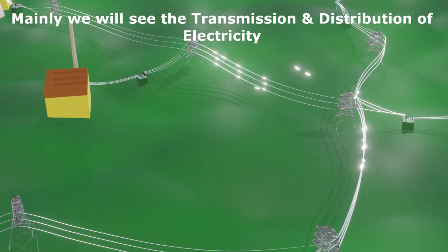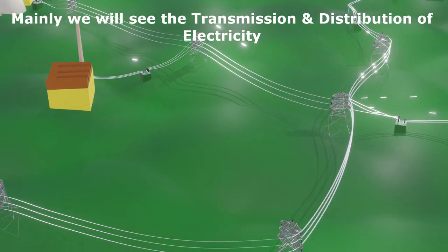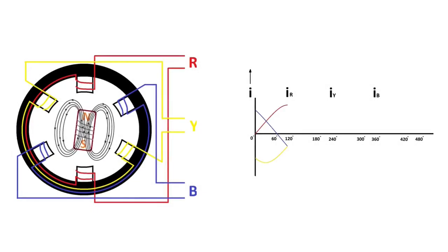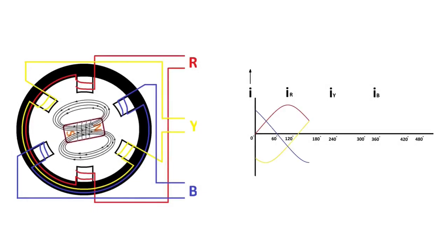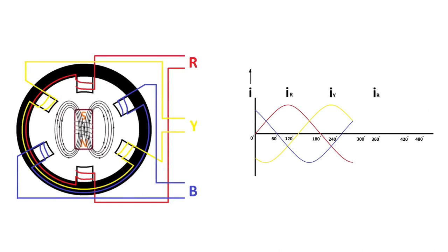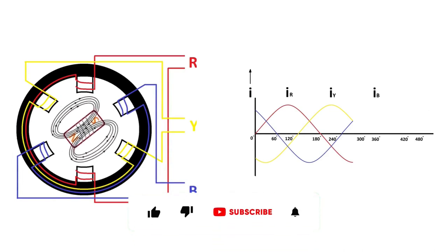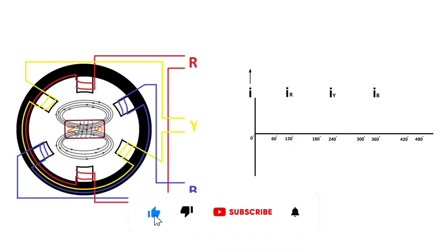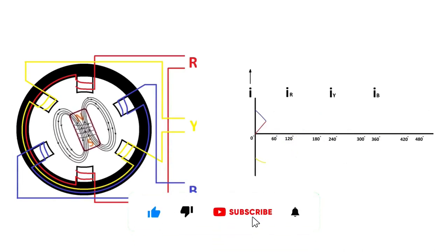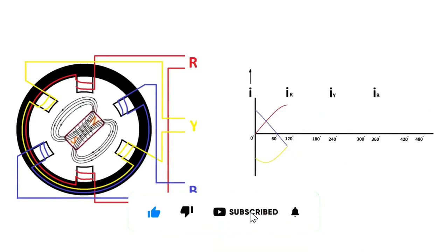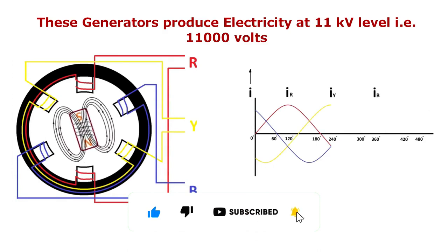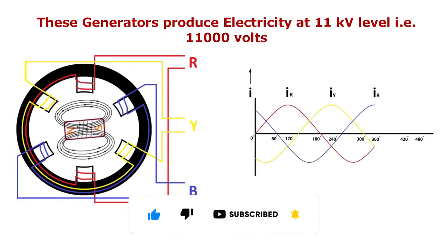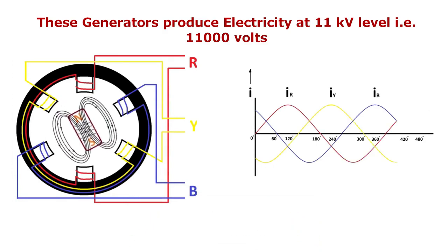Mainly we will see the transmission and distribution of electricity. Electricity is produced using electricity generators. These generators convert mechanical power such as hydropower, steam power, etc. into electricity. These generators produce electricity at the 11 kV level, that is 11,000 volts.